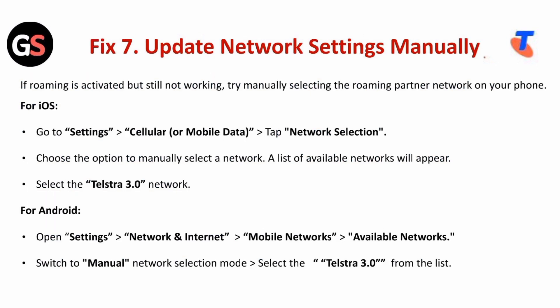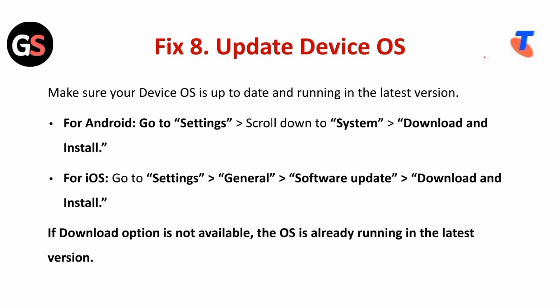Fix seven is to update network settings manually. If roaming is activated but still not working, try manually selecting the roaming partner network. For iOS, go to Settings, then Cellular, tap Network Selection, and choose to manually select a network from the list. For Android, open Settings, then Network & Internet, then Mobile Networks, then Available Networks, switch to manual network selection mode, and select the Telstra network from the list.